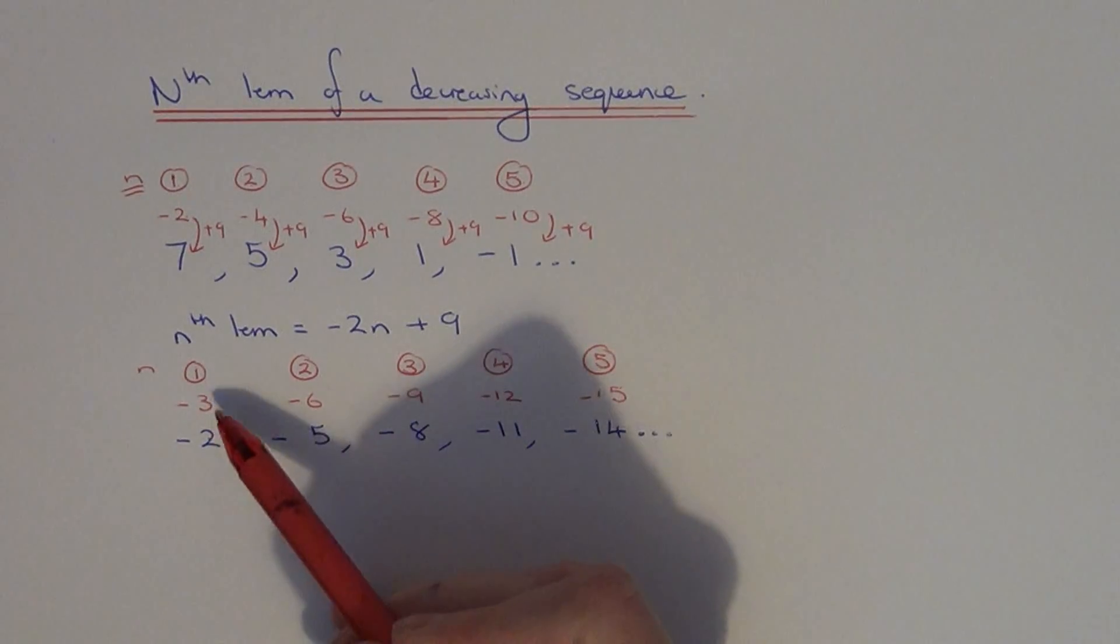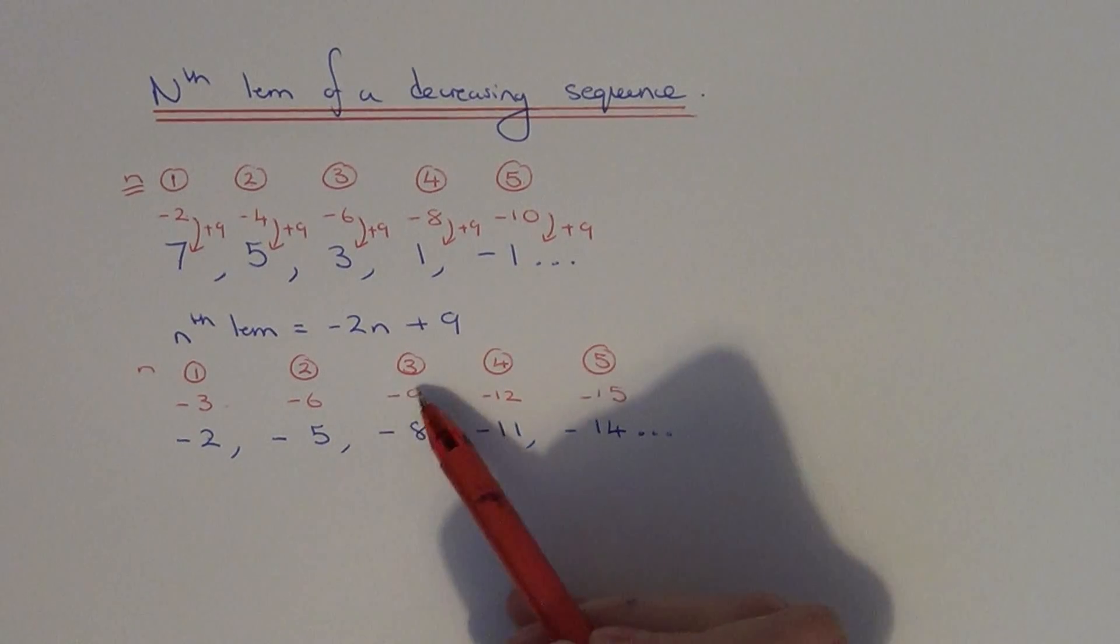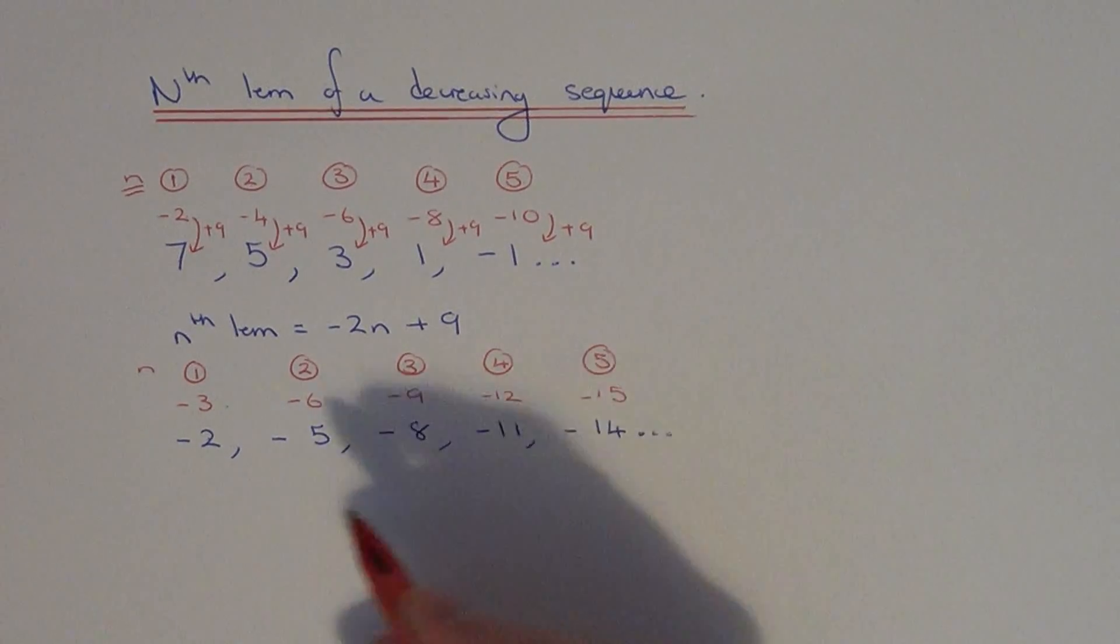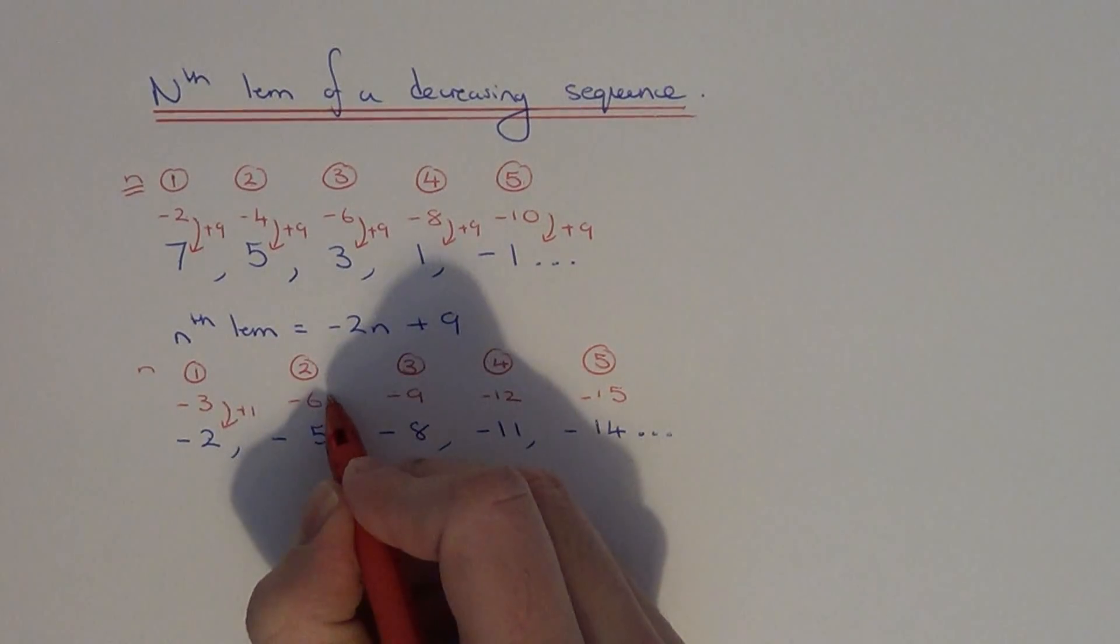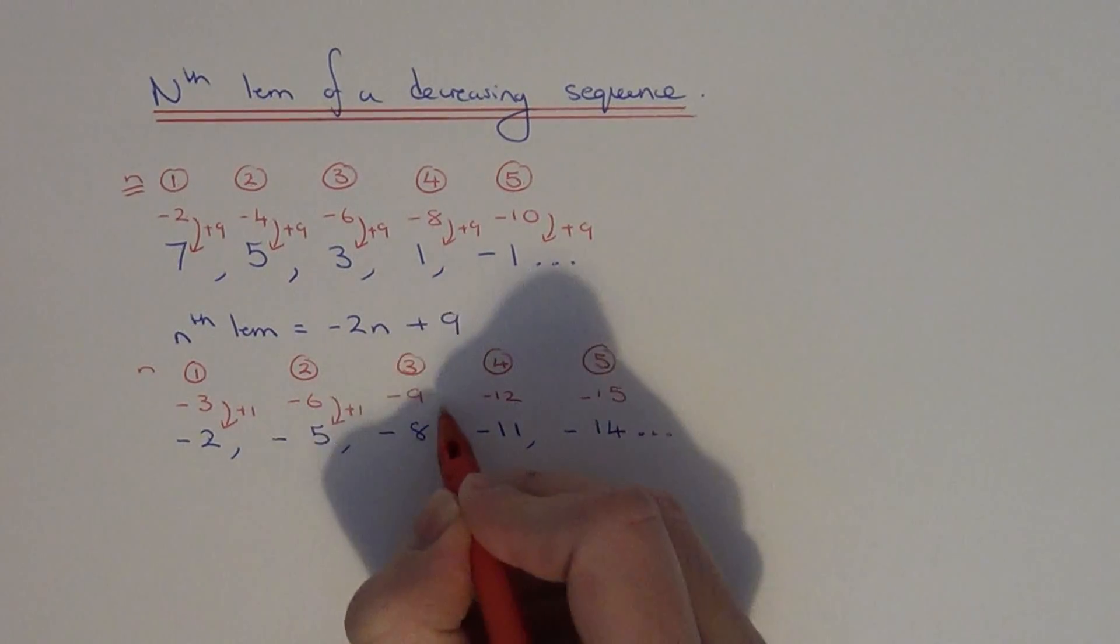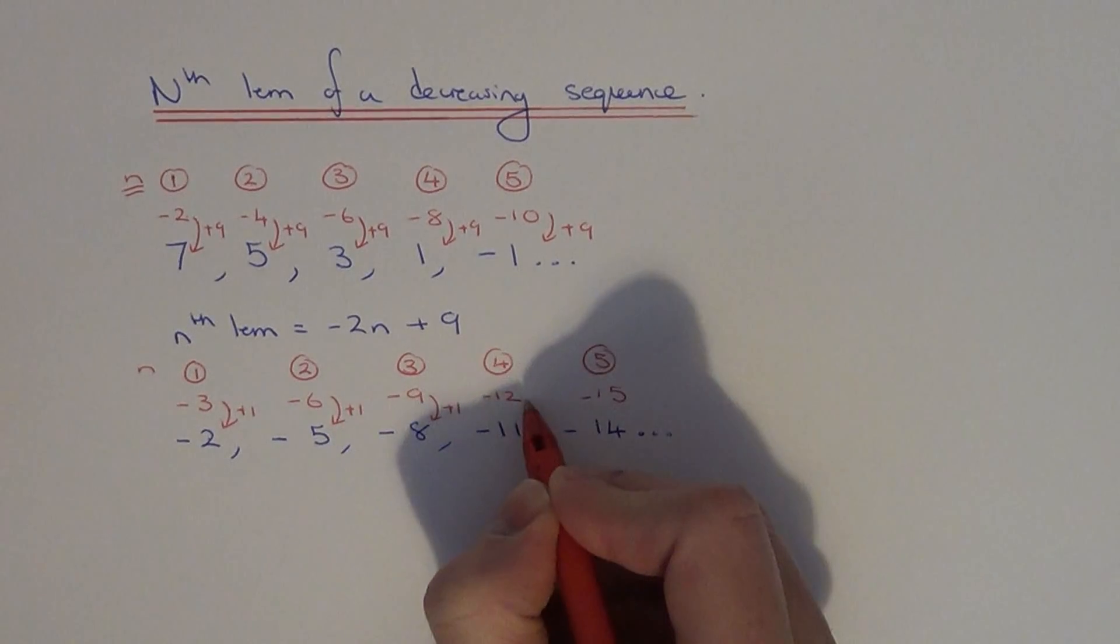Now what do you do to these minus 3 times tables to give you the numbers in the sequence? Well, if we add 1 onto minus 3, that will give us minus 2. And as you can see, this works for each of the other numbers in the sequence.